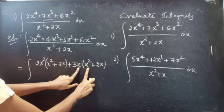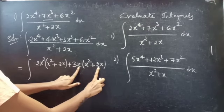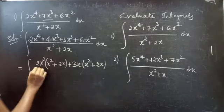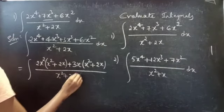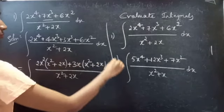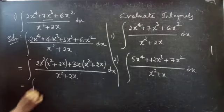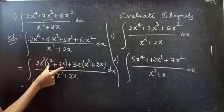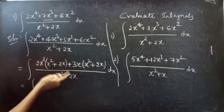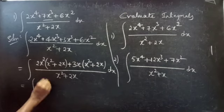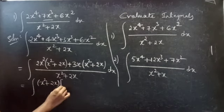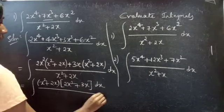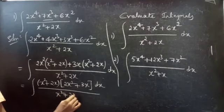So 3x × x² = 3x³ and 3x × 2x = 6x², giving us 3x(x² + 2x). Now we have the integral set up. We have two terms both containing x² + 2x, so we can take x² + 2x common from both terms, giving us (x² + 2x)(2x² + 3x) in the numerator.